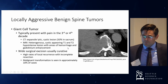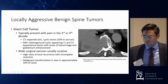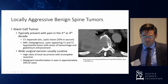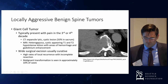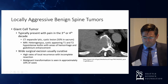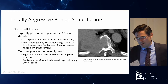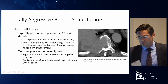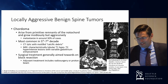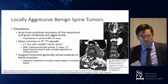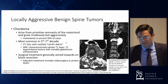The next step are locally aggressive benign tumors. Giant cell tumors require wide surgical excision from a surgical planning standpoint once you know what you're dealing with. These can be curative with surgery alone, although adjuvant radiation therapy can be used. They can also undergo malignant transformation in up to 10% of cases. Then chordomas — there will be a very interesting talk later in this conference about these — which are locally aggressive but can also metastasize.